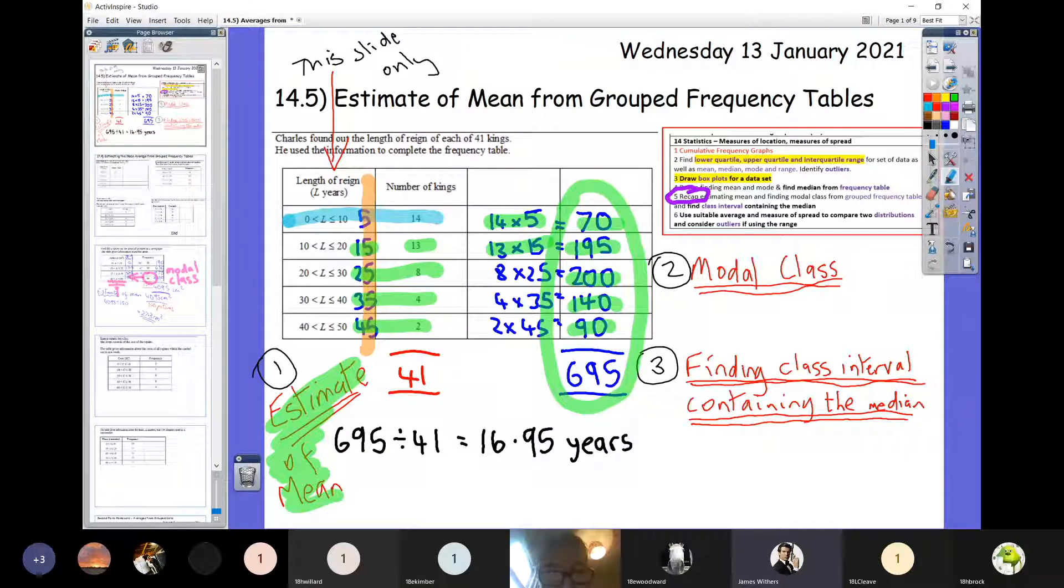We then divide that by the 41 kings to estimate that they reigned for exactly 16.95 years each. Now big point here guys, this is an estimate, but don't go and say okay so that's roughly 17 years. That's not the type of estimating we're talking about here. This is an estimate because of that original assumption we made that the 14 kings reigned for exactly 5 years. Please don't fall in the trap right at the end of the question when they've asked you for the estimate of the mean that you go and say okay I'm going to call that 17 years. It isn't. It is 16.95.